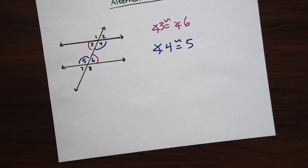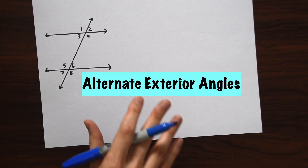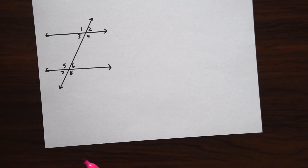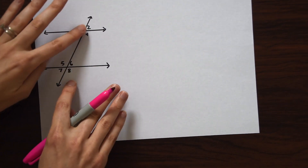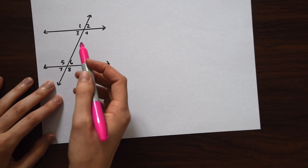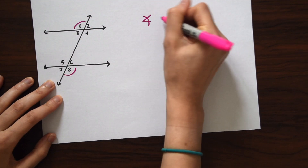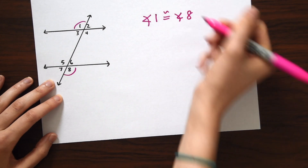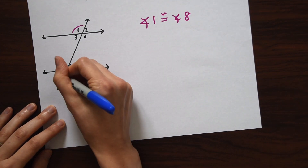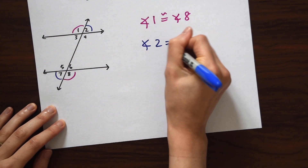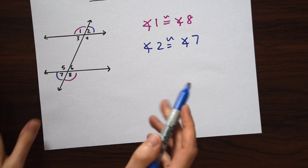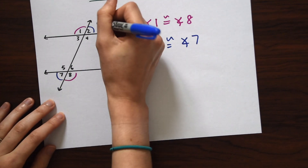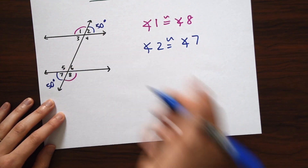There are only two sets of alternate interior angles here. Next we're going to look at alternate exterior angles — same idea, but now the pairs are on opposite sides and on the outside of the parallel lines. So angle 1 is congruent to angle 8, and the other pair is angles 7 and 2, so angle 2 is congruent to angle 7. These angles could be labeled with letters or actual degree values — if one is 50 degrees, the other is also 50 degrees.